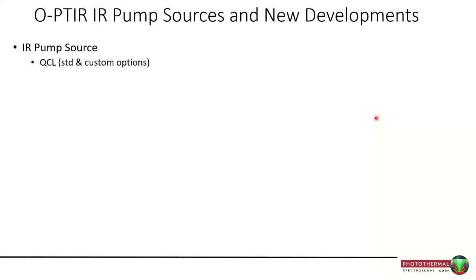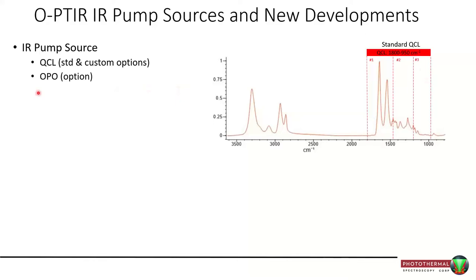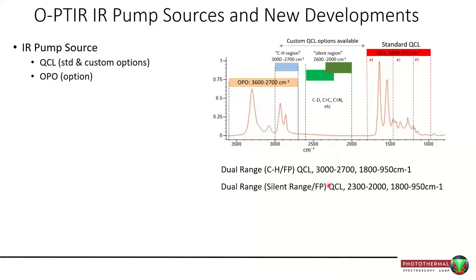At the heart of this is the QCL laser, and there have been some developments in recent years. The standard QCL covers 1800 to 950 cm⁻¹ with three chips. For higher wavenumber regions you can opt for an additional OPO laser covering 3600 to 2700 cm⁻¹. The CH chip covering 3000 to 2700 cm⁻¹ can be added as a fourth chip — up to four chips can be housed in these boxes — covering all the key functional groups in the mid-infrared spectrum. You can also opt for a silent region chip, or a low wavenumber chip going down to 800 cm⁻¹.